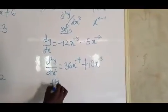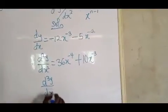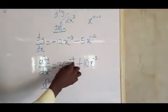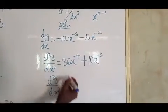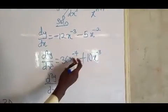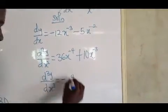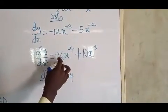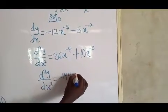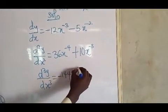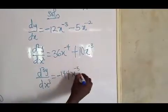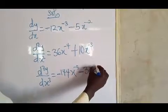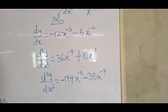Now d³y/dx³, which is the main one: differentiating 36x⁻⁴ gives minus 4 times 36 = minus 144x⁻⁵. Differentiating 10x⁻³ gives minus 3 times 10 = minus 30x⁻⁴. So d³y/dx³ = −144x⁻⁵ − 30x⁻⁴. This is how you differentiate step by step for each question you are given.